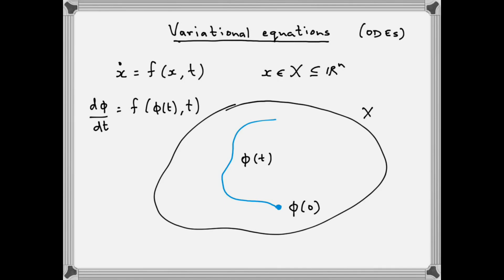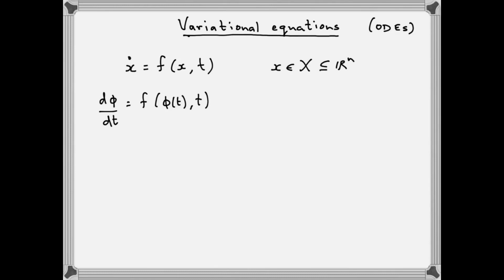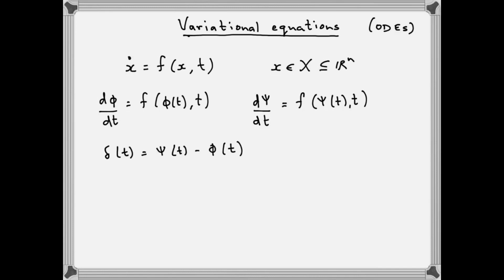Let's write down the variational equation. Suppose we have a second solution to the differential equation, which we'll call psi, and suppose phi and psi have nearby initial conditions. We'll define delta(t) to be the difference between psi(t) and phi(t), and we'll assume that delta naught — namely the initial difference between these two solutions — is small. Now let's write down a differential equation for the evolution of delta.